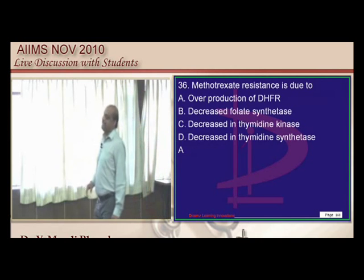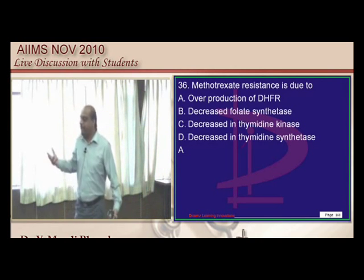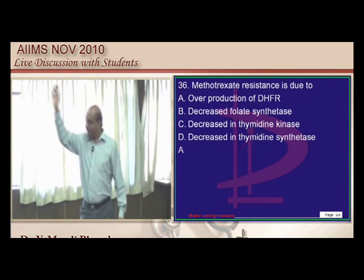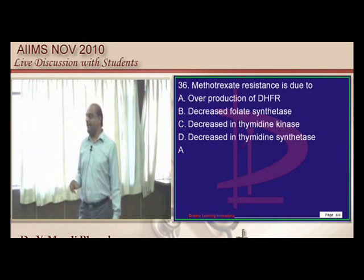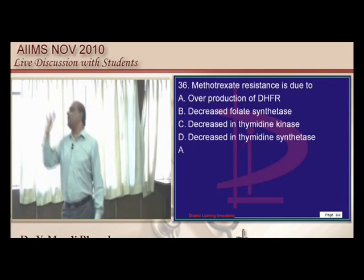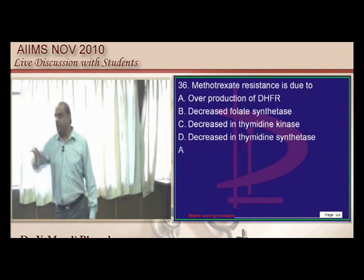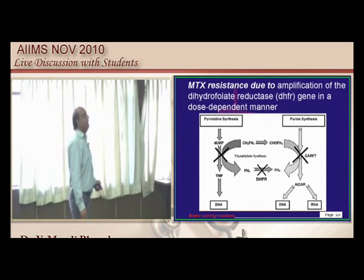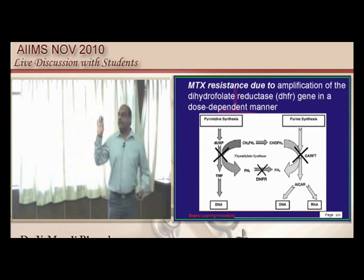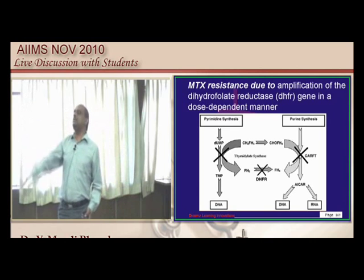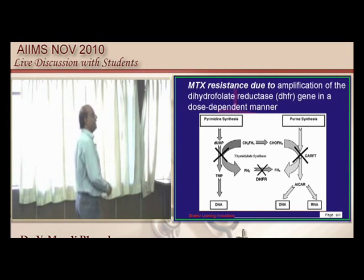Dihydrofolate reductase — why does methotrexate resistance occur? Methotrexate inhibits dihydrofolate reductase. Our cells learn how to produce more dihydrofolate reductase, which leads to resistance. The dihydrofolate reductase gene is overexpressed, and that is responsible for methotrexate resistance.